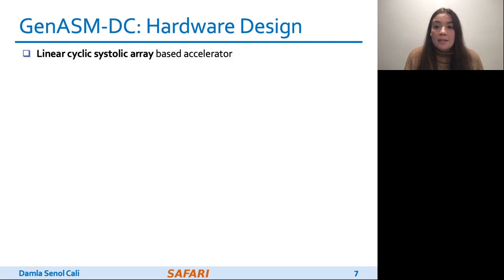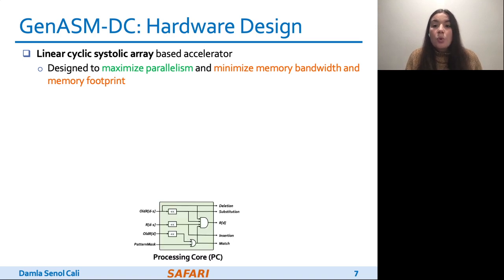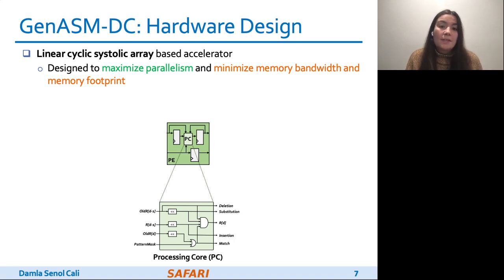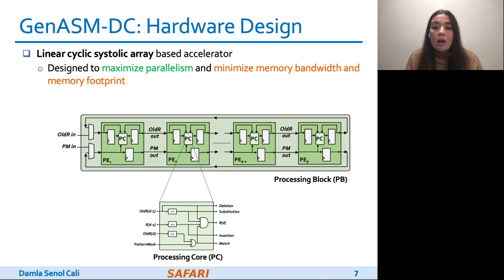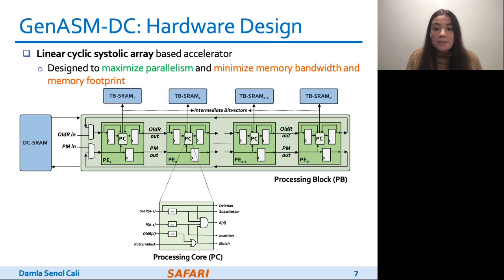We implement GENASM-DC as a linear cyclic systolic array-based accelerator using small and very simple logic components. This design helps us to maximize parallelism and minimize memory bandwidth and memory footprint. The processing core is the basic compute component which computes the intermediate bit vectors. When we add flip-flop-based storage logic around the processing core, we define a processing element, or PE. Multiple PEs are concatenated to define a processing block. We also have DC SRAMs, which store the reference text, the pattern bitmasks for the query read, and the intermediate data generated from PEs. TB SRAMs store the intermediate bit vectors generated by each PE of GENASM-DC for later use by GENASM-TB.